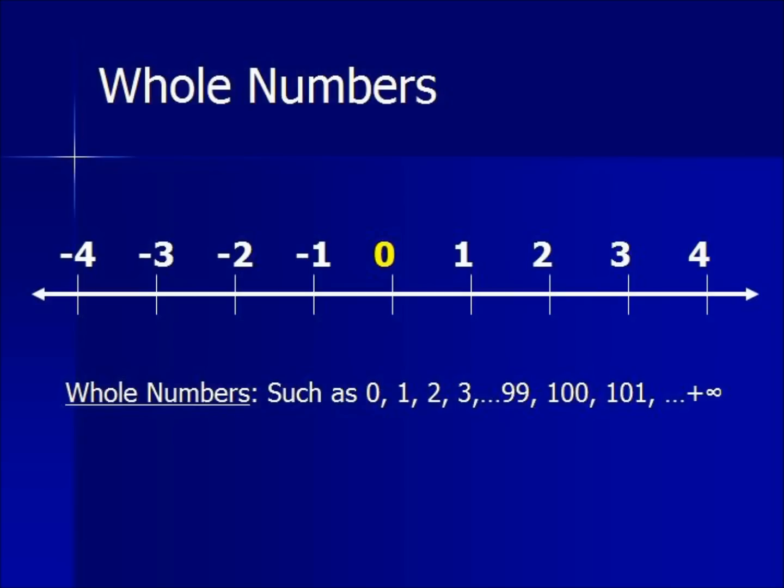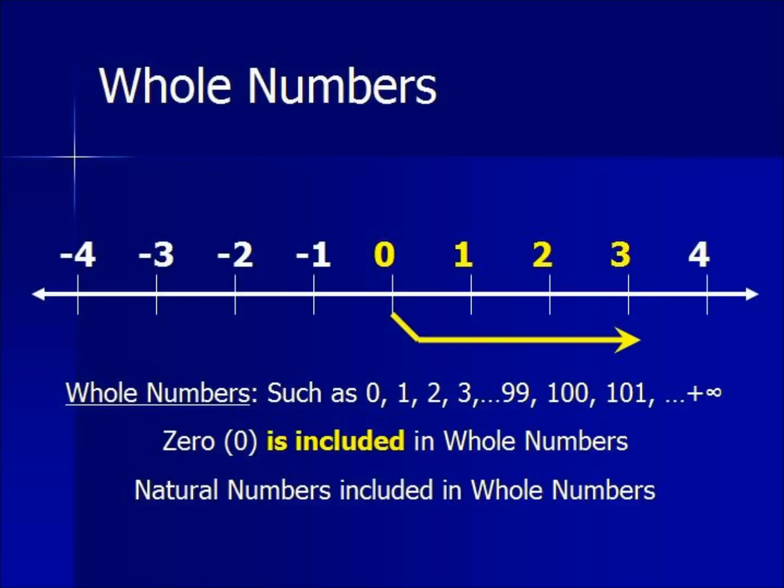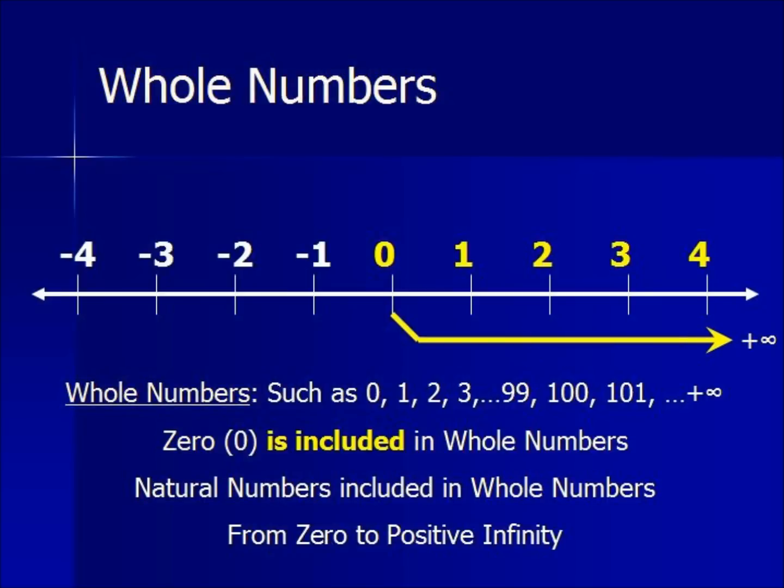Now whole numbers do include 0, and as the illustration shows, whole numbers include 0 and they stretch all the way to positive infinity: 1, 2, 3, 4, 5, 1000, a million. Natural numbers are included inside of whole numbers.